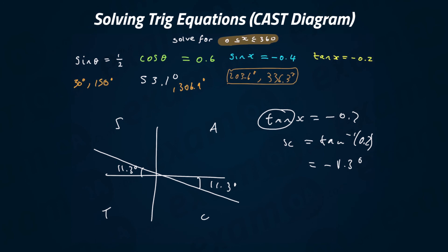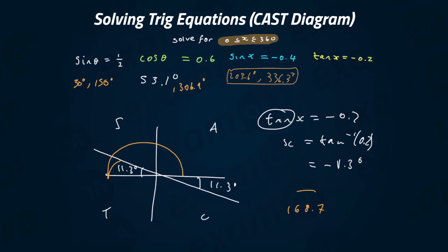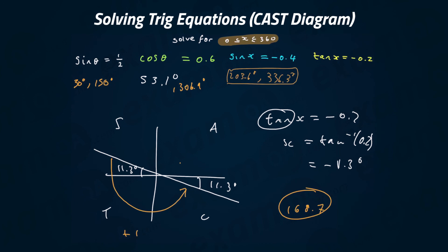Starting from the positive x-axis and going anti-clockwise: that first value is 180 degrees minus 11.3, which is 168.7 degrees. Because it's a straight line, for the next value you simply add 180 degrees: 168.7 plus 180 gives 348.7 degrees. These are our two values for tan x equals minus 0.2.